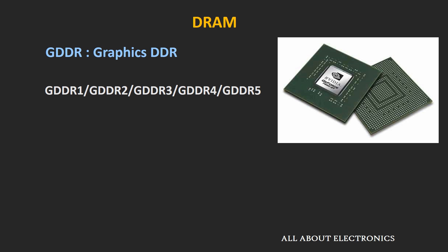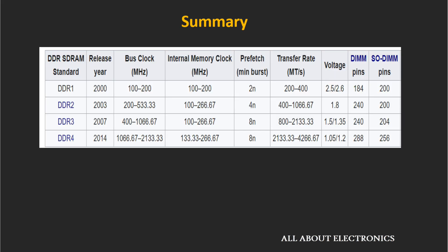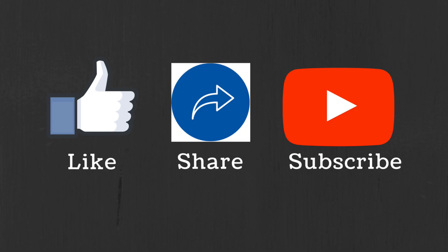That's all about the different types of RAM used in different applications. I hope you got an overview of the different types of dynamic RAM. If you have any questions or suggestions, let me know in the comments below. If you liked this video, hit the like button and subscribe to the channel for more such videos.